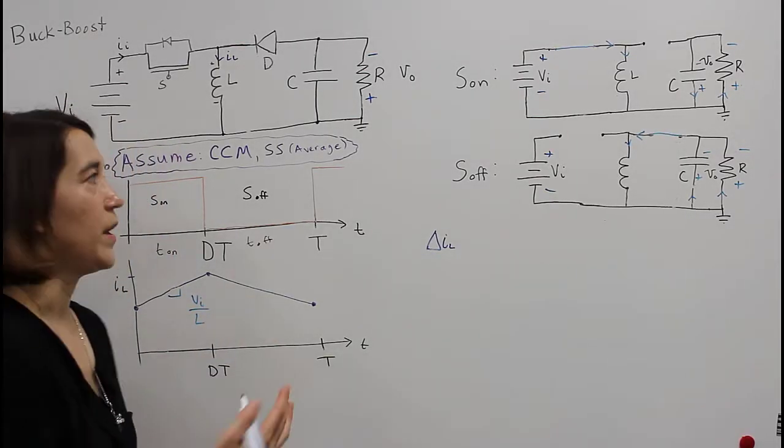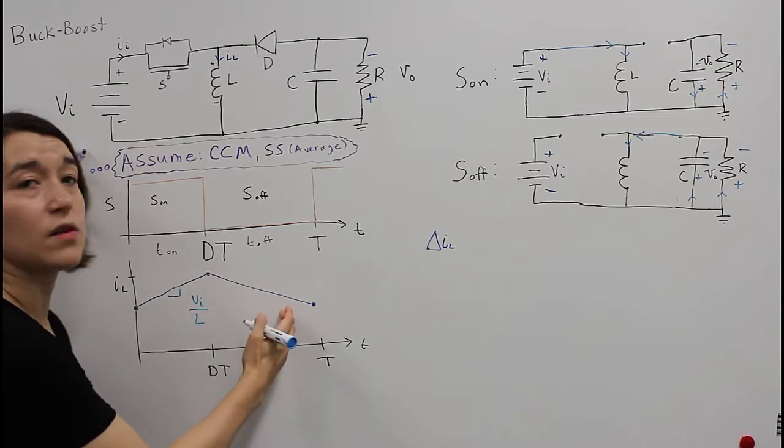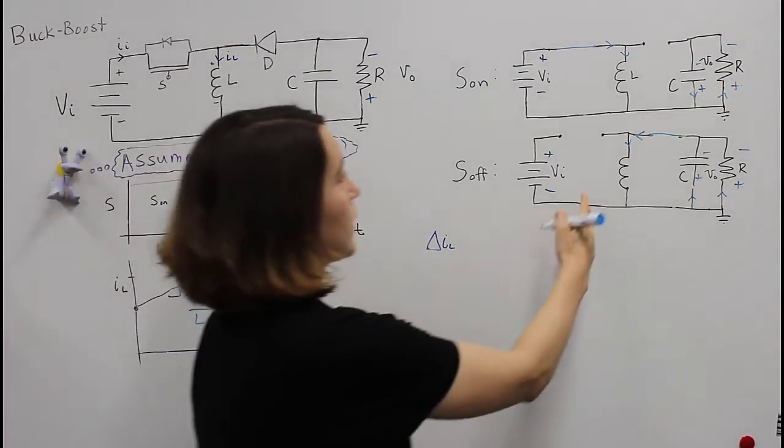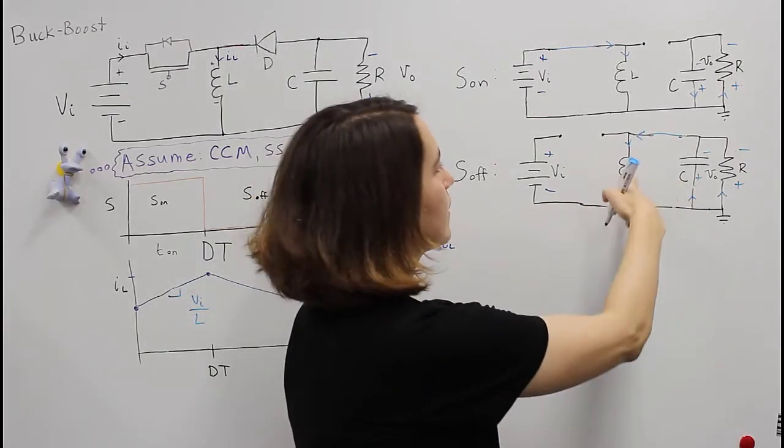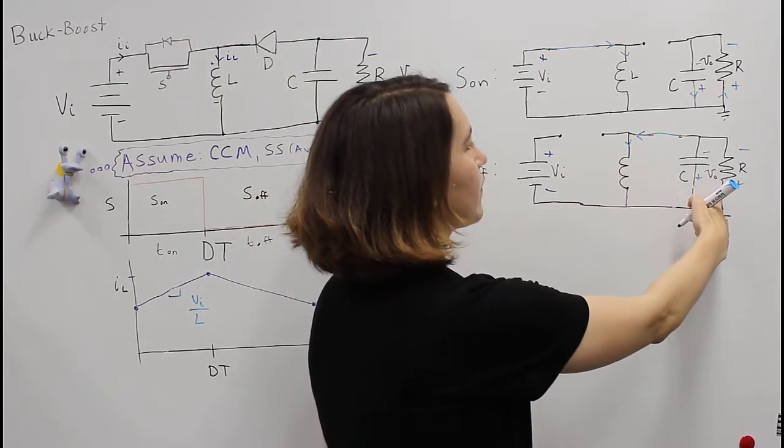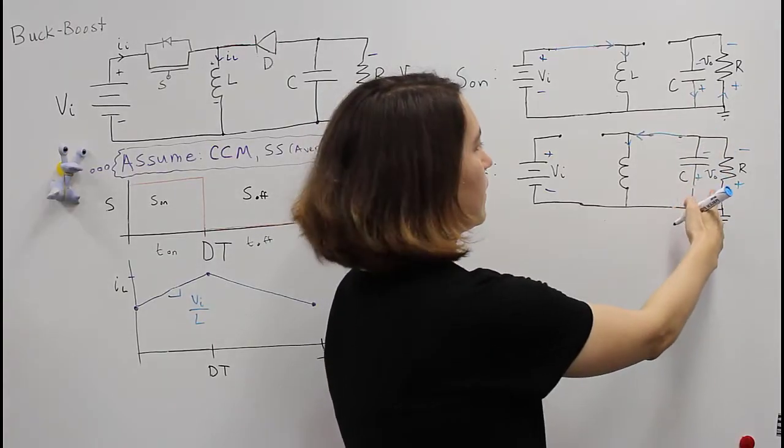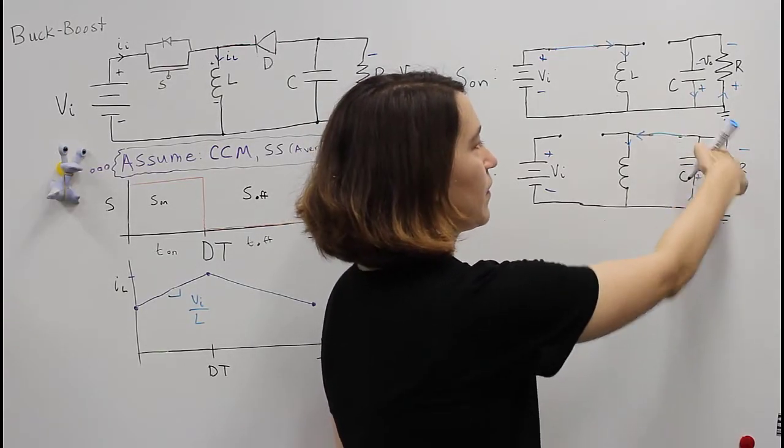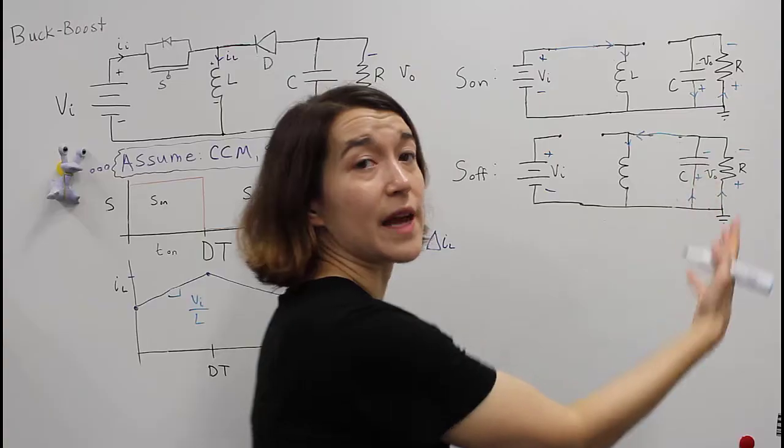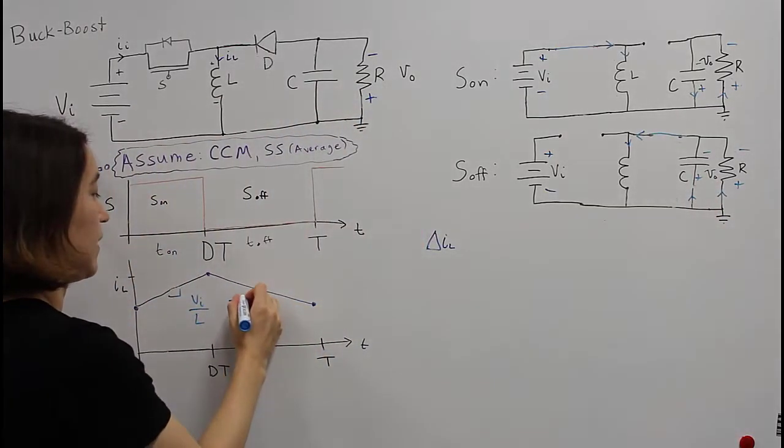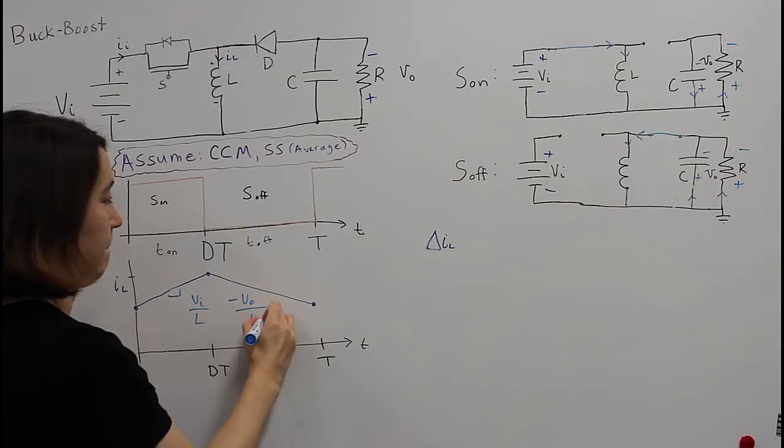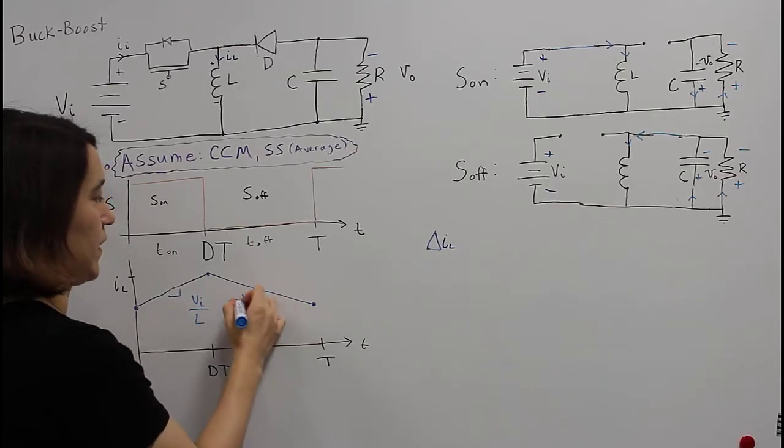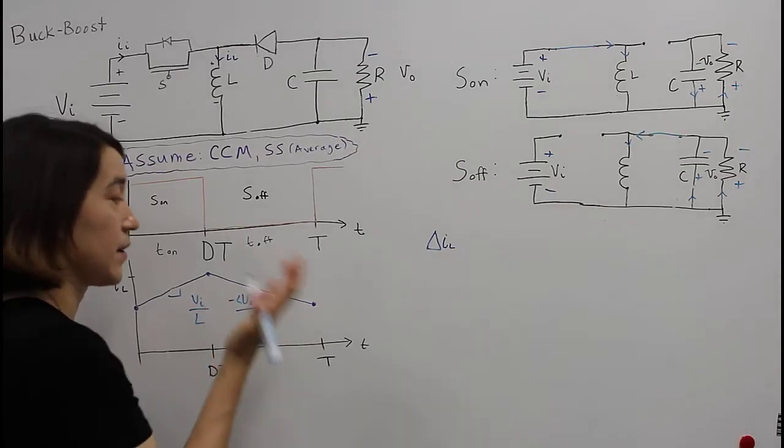What about during this phase, when this active switch is off? If we look here, we see the voltage over the inductor during this phase is actually negative Vout. So this is Vout, that's the value, and it's below zero. So it's going to be negative Vout over L. This is the average value.